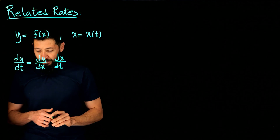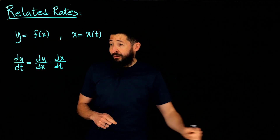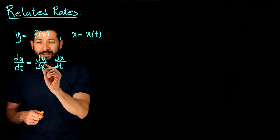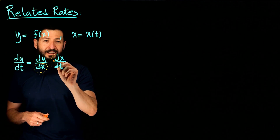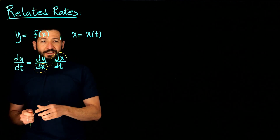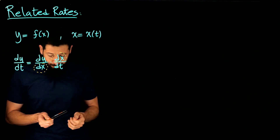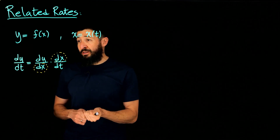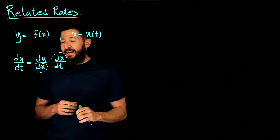That's our chain rule. You don't actually cancel because these are not quotients — this is just the derivative. But as a learning tool, if you could cancel those two, you'd get dy/dt, and that's how you can remember the chain rule in this setup.